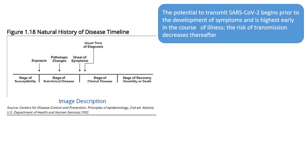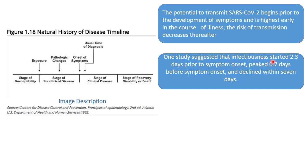Common sense tells us that you are likely to be infectious when you are symptomatic — coughing and having a runny cold. But the fact of the matter is that in most infections, including COVID, the patient begins to transmit the disease prior to the development of symptoms, and the risk of transmission decreases thereafter. One study suggested that infectiousness started 2.3 days prior to symptom onset, and you are most infectious 0.7 days before symptoms appear. It normally declines within seven days.